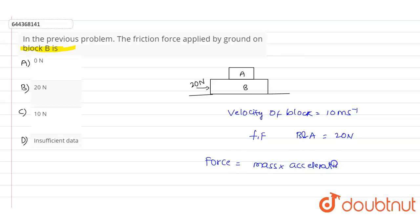So we can write F = ma. The friction force between block B and the ground is zero, as the acceleration of the block is zero - they are moving with constant velocity. Out of these four options, option A, zero newtons, is the correct answer.